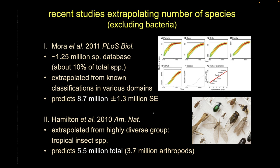We can also do extrapolation as in the Mora paper, using species accumulation curves across different taxonomic rankings — extrapolating what we know to estimate where curves will asymptote. That approach gives on the order of about 9 million species total.